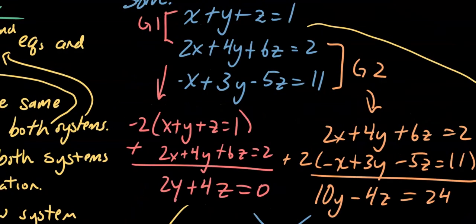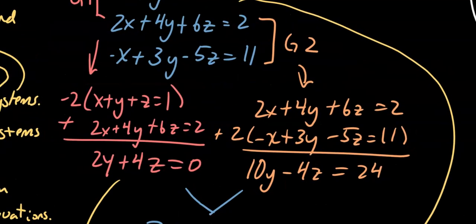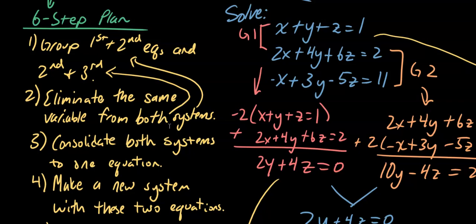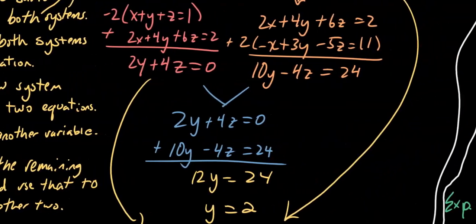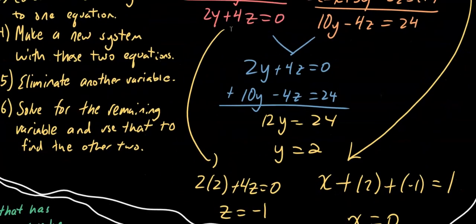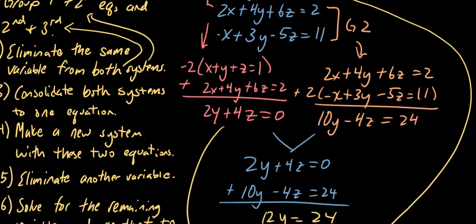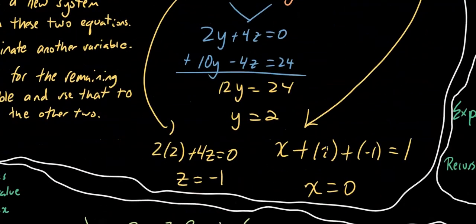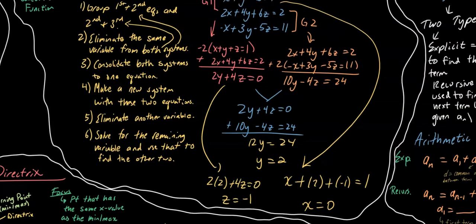Taking the first group, we multiply the top equation by negative 2 to cancel the x's, leaving 2y plus 4z equals 0. For the second group, we multiply by 2 to eliminate x, getting 10y minus 4z equals 24. We've now eliminated x from both systems. Using these two new equations, we add them together to eliminate 4z and find y equals 2. Substituting back gives z equals negative 1, and then plugging into the original equation gives x equals 0. Final solution: x = 0, y = 2, z = −1.